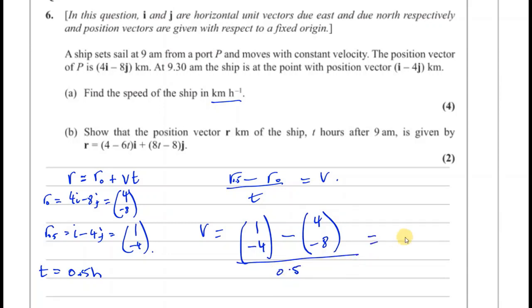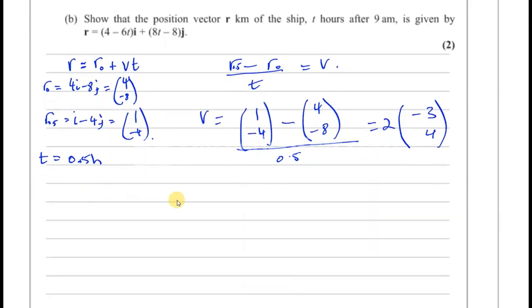And all of that is divided by 0.5. So you end up with 1 minus 4. When you divide something by 0.5, you multiply it by 2. So it's going to be 2 times, you have 1 minus 4, which is minus 3. And you have minus 4 minus minus 8, which is minus 4 plus 8, which is 4. So your velocity vector, therefore, is going to be minus 6 and 8, which you can write as minus 6i and plus 8j.